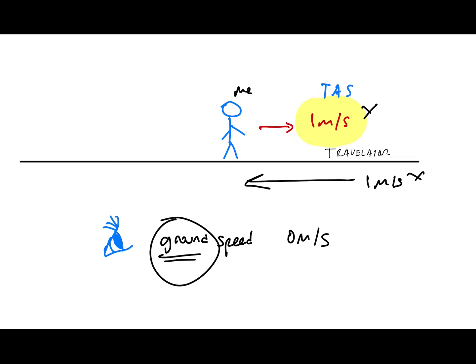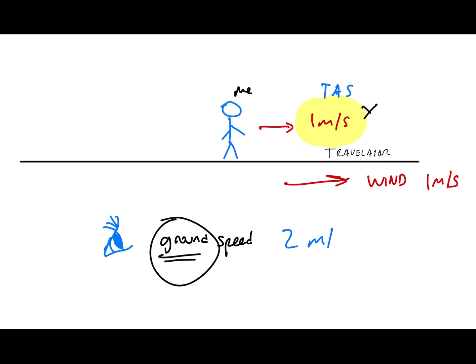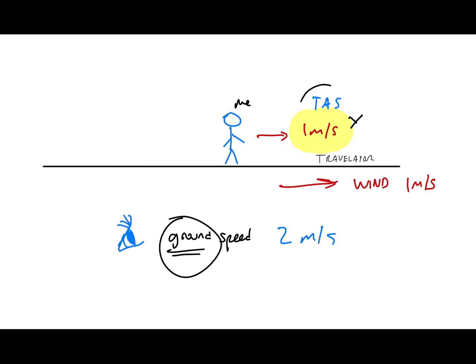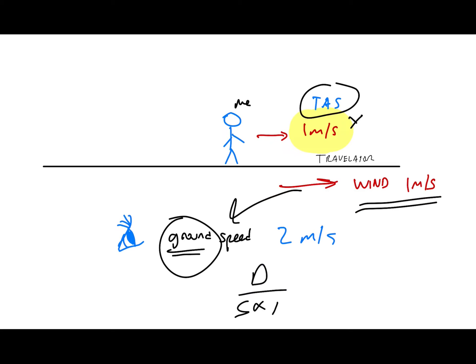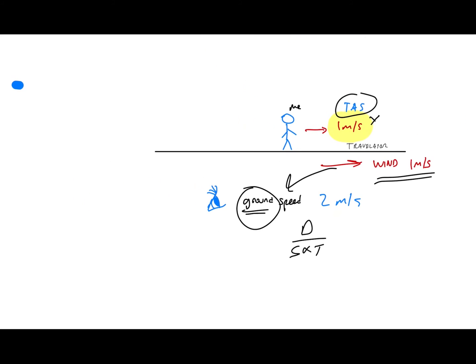The movement of the travelator represents wind. If it's against you, it's a headwind; if it's in the same direction, it's a tailwind. If the travelator moves at one meter per second in the same direction as you're walking, then from the ground's perspective you are moving at two meters per second — that's your ground speed. That's why we use true airspeed in navigation: with true airspeed, you just account for the wind and get your ground speed.